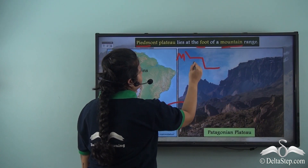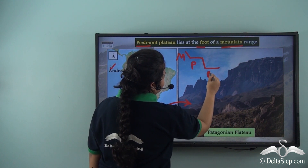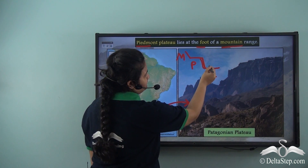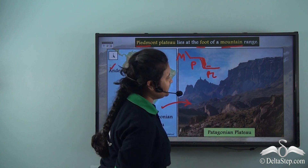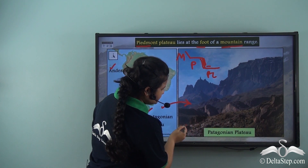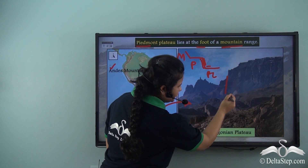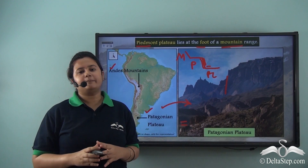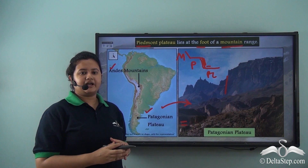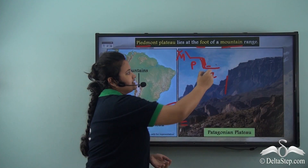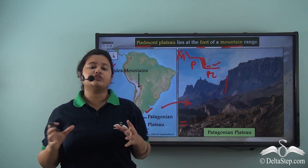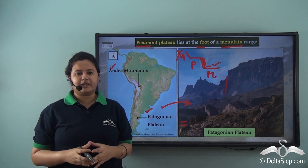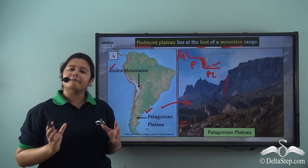This is a mountain, this is a plateau, and this is a plain. The side of the plateau that faces the plain has a steep slope. From this we can understand the structure of a Piedmont Plateau: on one side we have a mountain range and on the other side we have a plain, and the part of the plateau facing the plain has a steep slope. So a Piedmont Plateau is a type of plateau that lies at the foot of a mountain range.